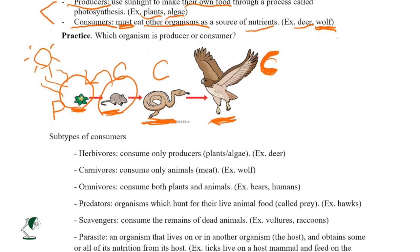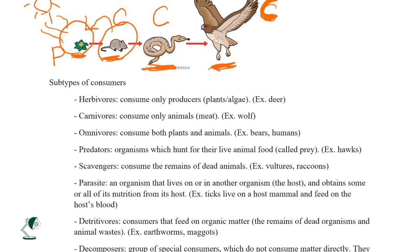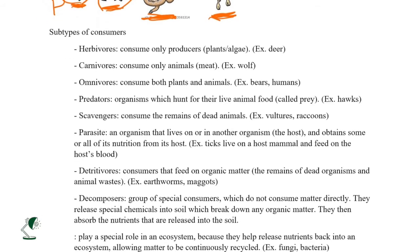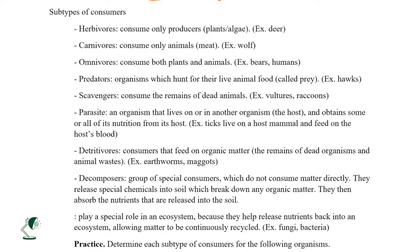Now let's look at the types of consumers. Herbivores consume only producers — plants or algae. Examples of herbivores include deer and rabbits. Basically, any organism that feeds on plants is a herbivore.